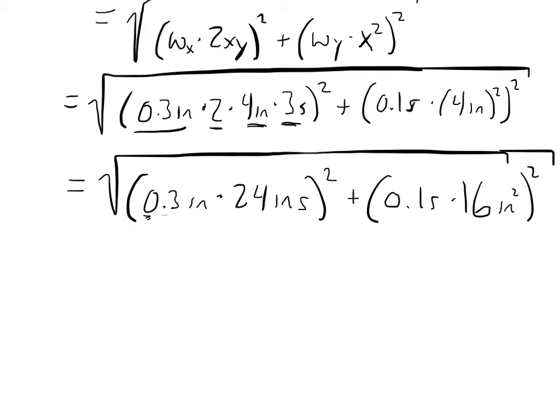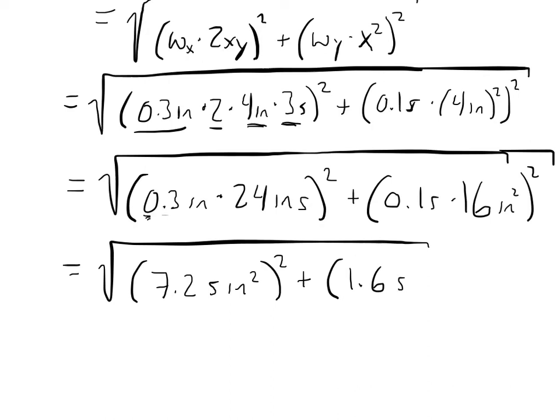Now, if we combine these terms, then we're going to get 0.3 times 24, or I'm going to calculate this as 7.2. So, 7.2 seconds times inches squared, squared. And 0.1 times 16 is 1.6 seconds inches squared, squared. And you can notice here, each under each parenthesis, we have the same units. Seconds inches squared, seconds times inches squared.